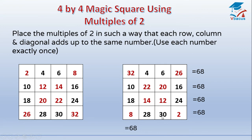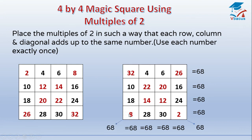4 plus 22 plus 12 plus 30 is equal to 68. 26 plus 16 plus 24 plus 2 is equal to 68. Let us see the diagonals: 32 plus 22 plus 12 plus 2 is equal to 68. Other side: 26 plus 20 plus 14 plus 8 is equal to 68.